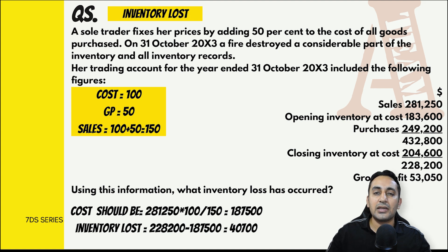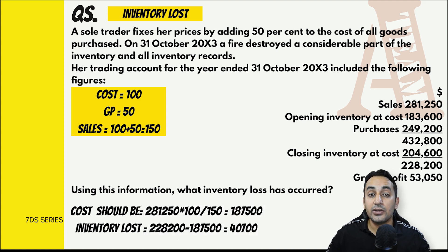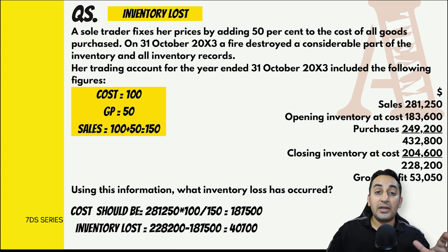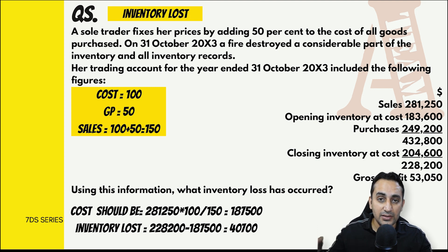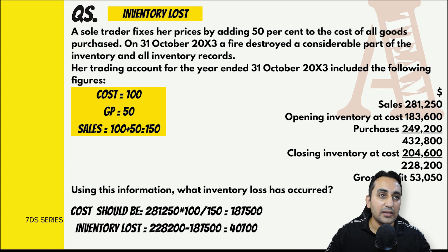इन्होंने कहा कि 228,200 का cost of goods sold होना चाहिए। यह difference इसलिए है क्योंकि inventory आग से destroy हो गई थी। Answer is the difference between the two यानी 40,700 inventory lost हुई। इस तरह inventory lost का logic समझ में आ गया और margin-markup वाला concept दोबारा revise हो गया।